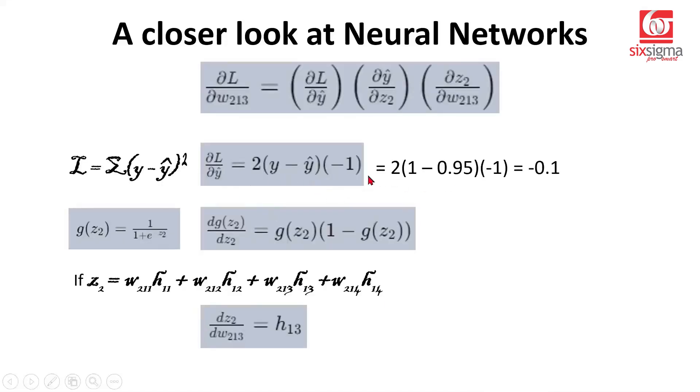Let's put all the values here. This is 2(1 - 0.95) multiplied by negative 1, which is negative 0.1. This is 0.95 times (1 - 0.95), which is 0.0475. And h13 is 2.1. Now we can put these values and get dL/dW213. Let's plug these values: negative 0.1, times 0.0475, times 2.1. If you simplify this, it comes out to negative 0.00998, which rounds to negative 0.01.